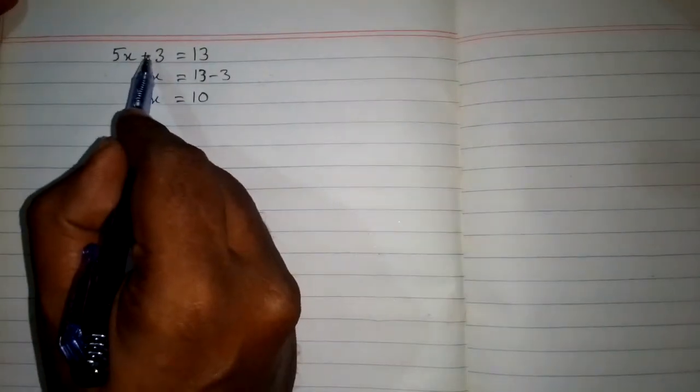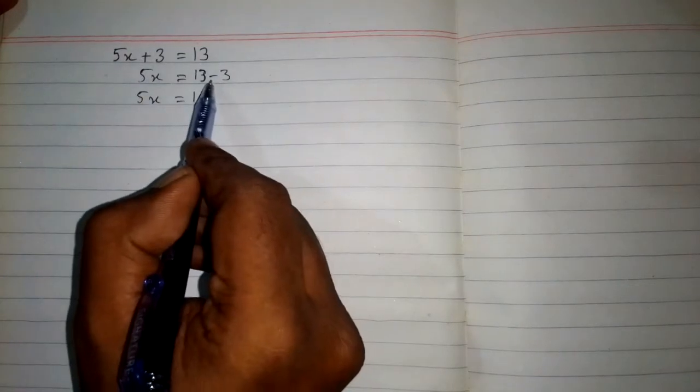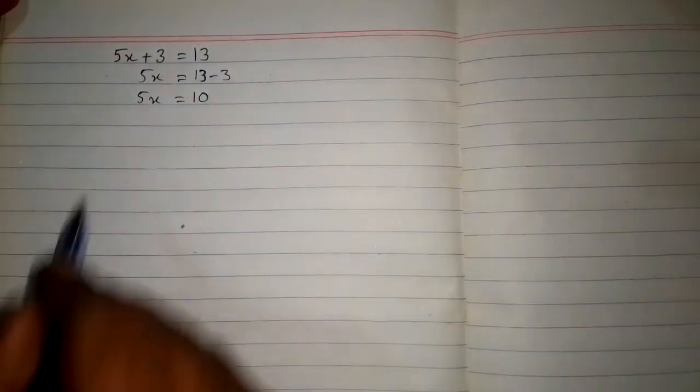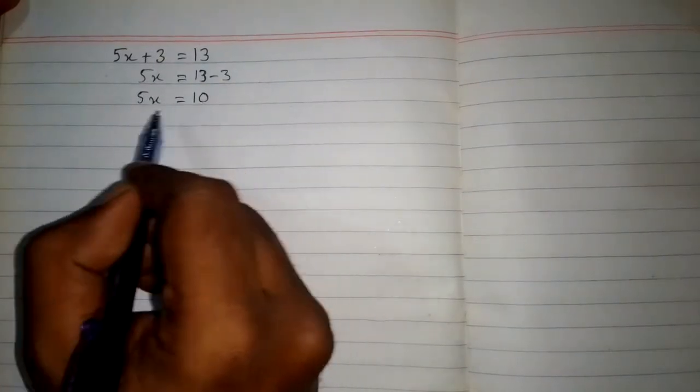We can see that the plus sign will become a negative sign when we take the number on the other side of the equation. So we have 5x equals 10.